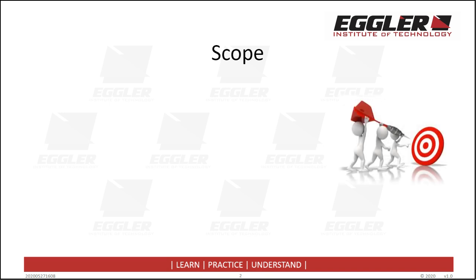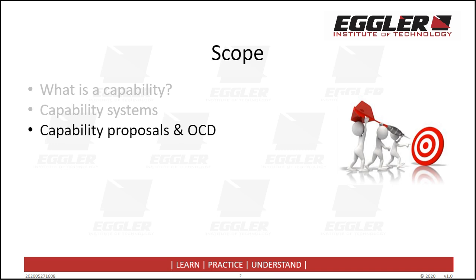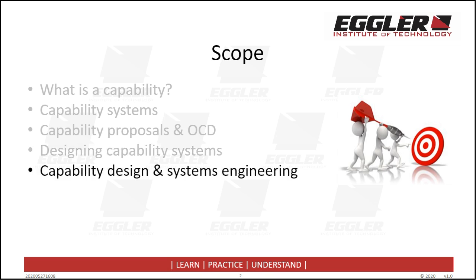During the lesson I am going to introduce you to what constitutes a capability, and how capability systems are developed and used to deliver military operational effects. I will outline the use of capability proposals and how this document is used to describe the rationale and need for new capability systems. You will learn that developing capability proposals needs to be underpinned by disciplined and rigorous operational analysis, and that this process is absolutely essential in successfully designing new capability systems. The capability proposal also provides the essential bridge between the operational and system domain — work often referred to as front-end system design, which takes place within the well-established systems engineering framework.